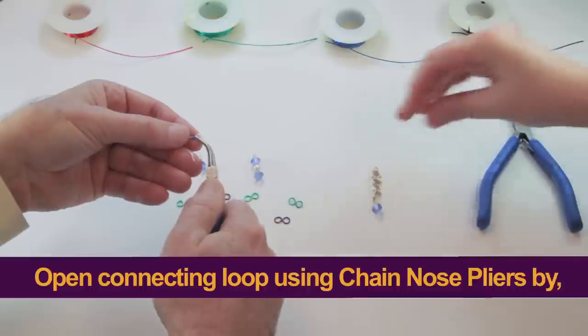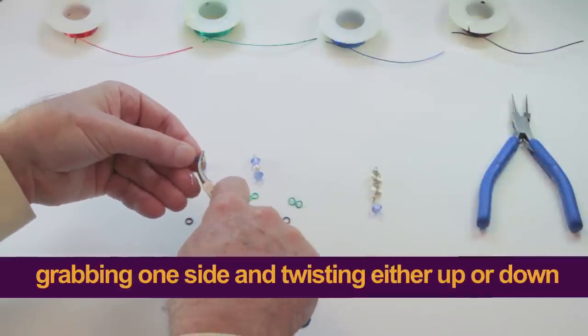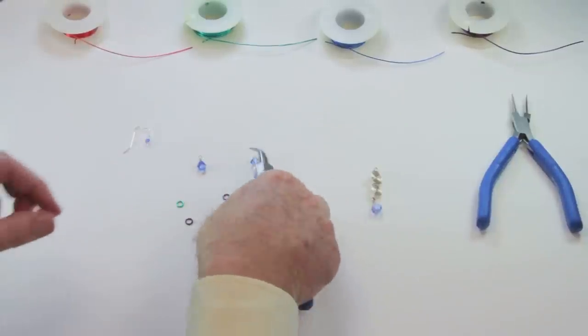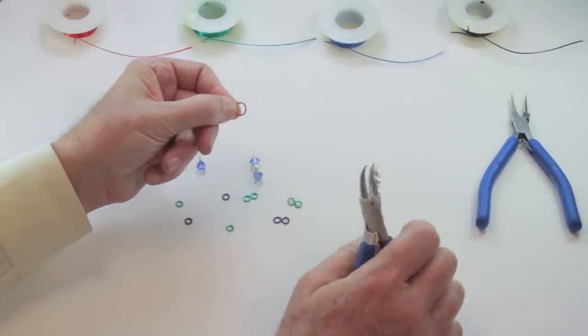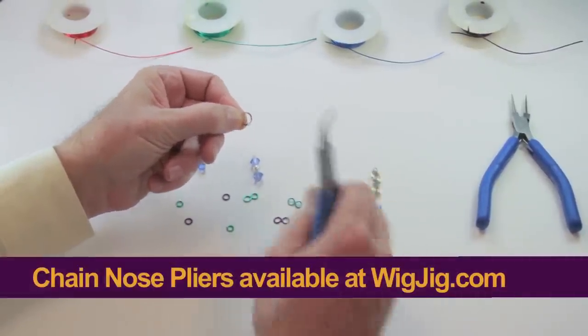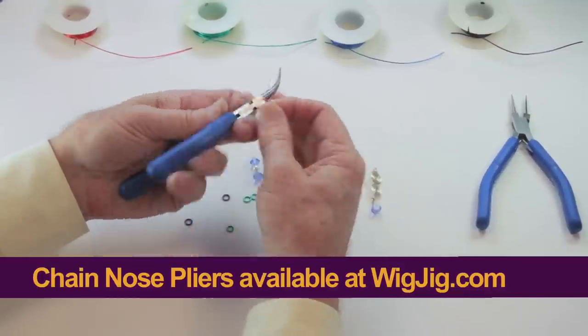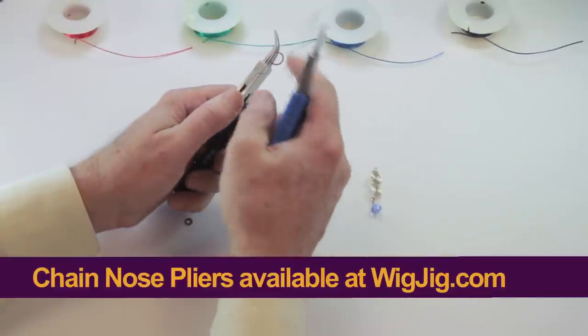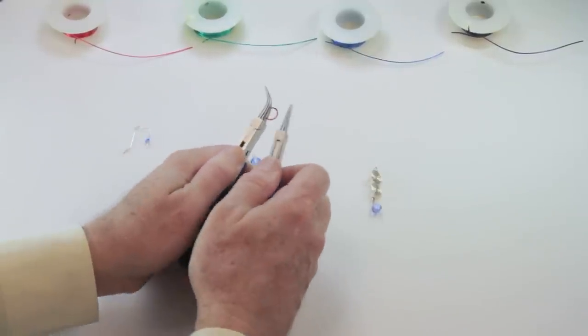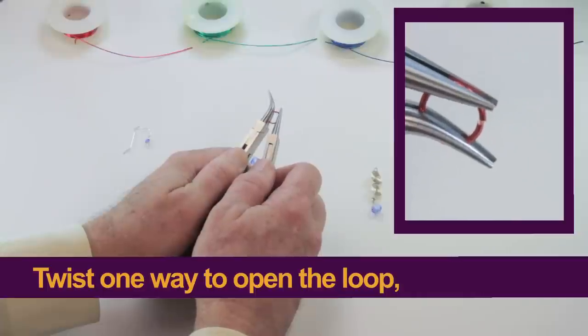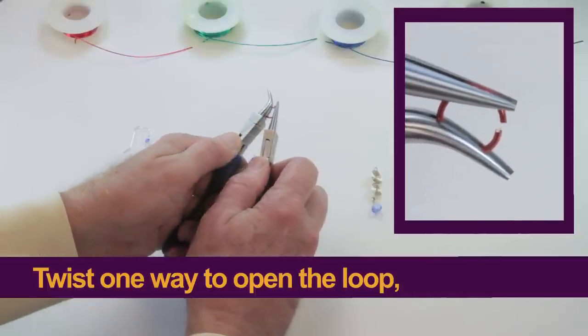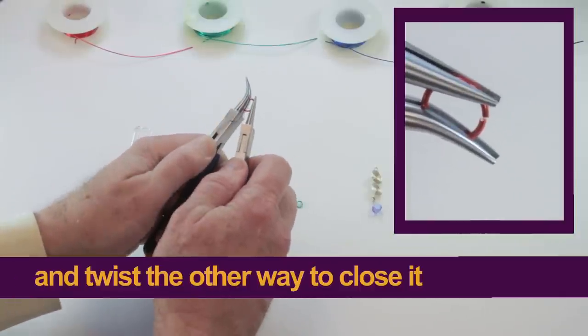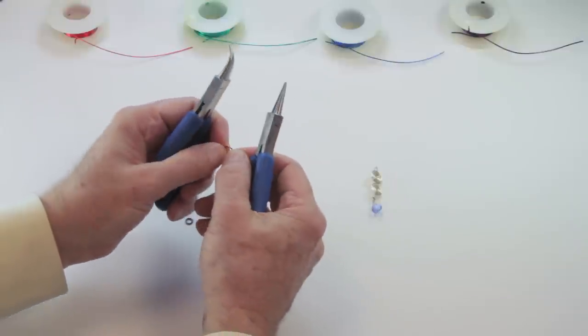You open and close the loop with your chain nose pliers by grabbing one side of the loop and twisting it up or down. The important thing, here's a really large jump ring that will help demonstrate this. The tools that we use for opening and closing jump rings are chain nose pliers. You grab one side with one pair of pliers and the other side with the other, and you twist up to open. You can see it's open like that. And you twist down to close.